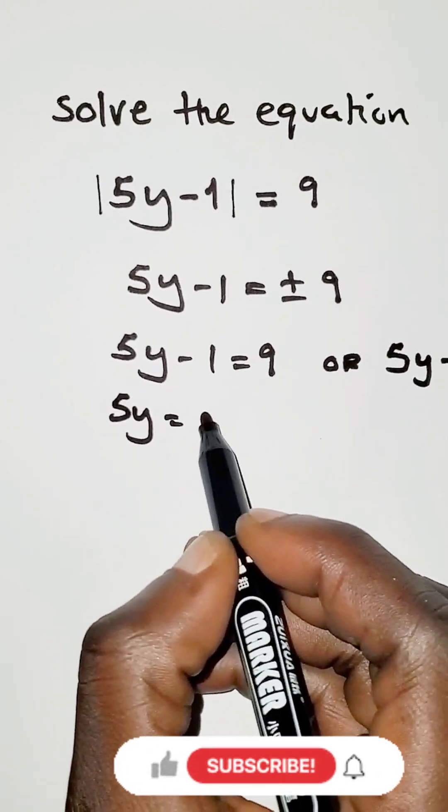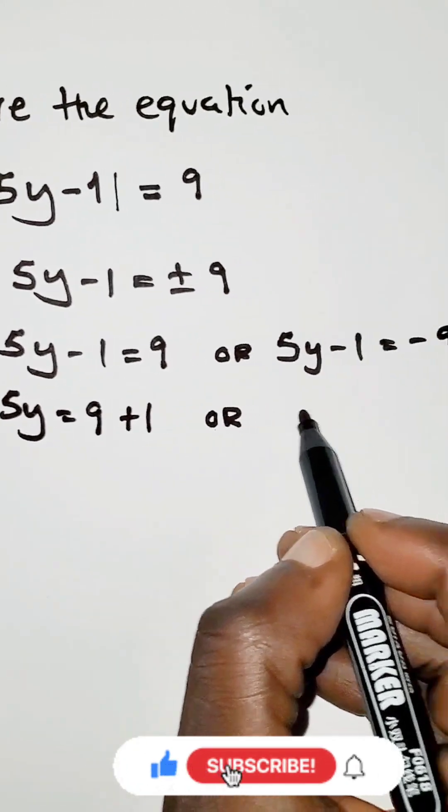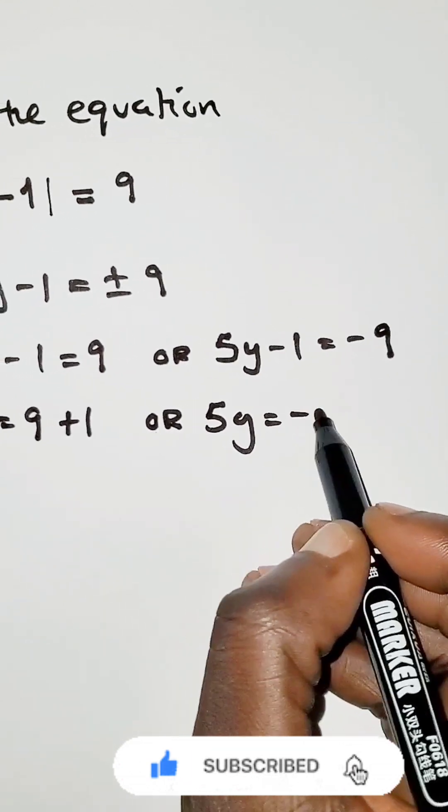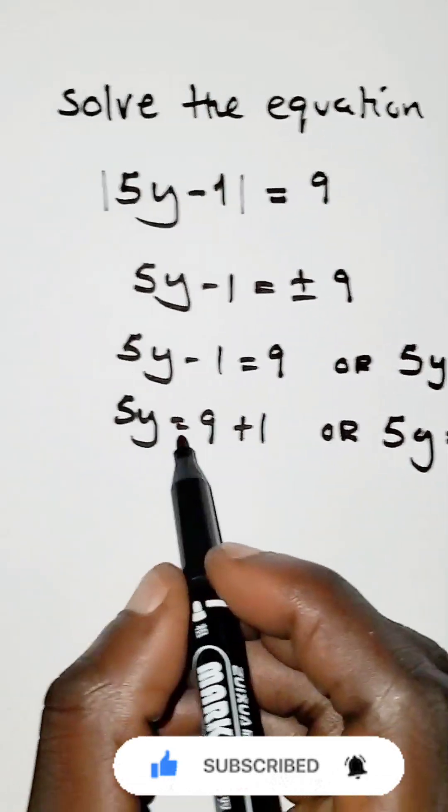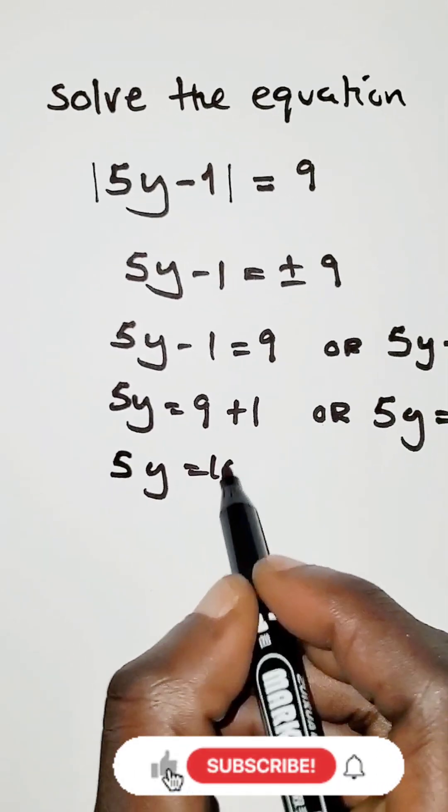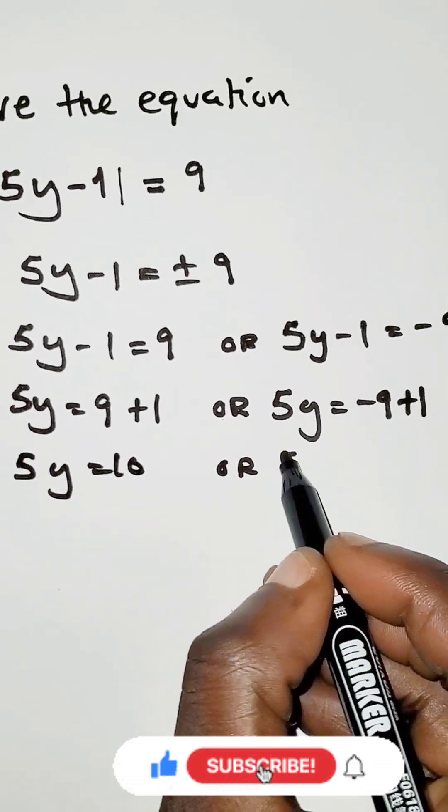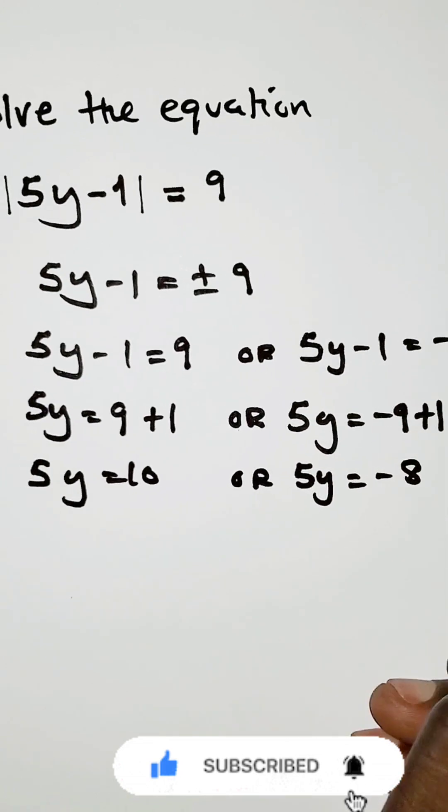To solve for y here, we're going to say 5y is equals to 9 plus 1, or 5y is equals to minus 9 plus 1, because the 1 crosses the cosine. Therefore, here it will be 5y is equals to 10, or 5y is equals to minus 8.